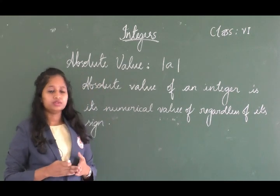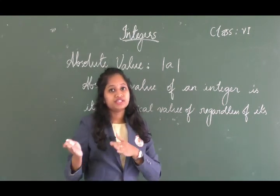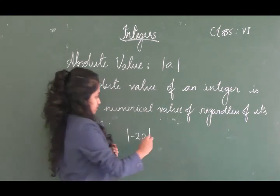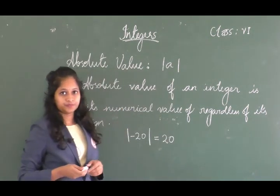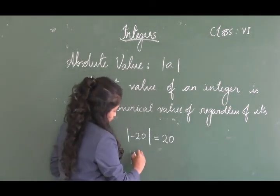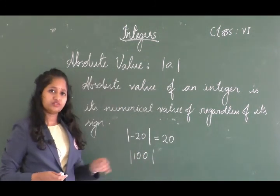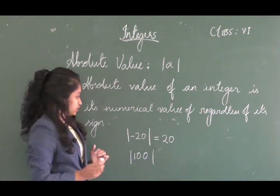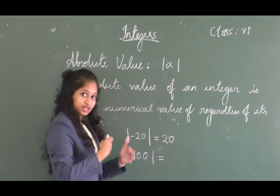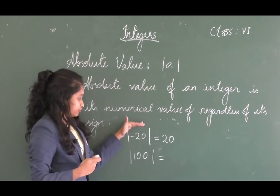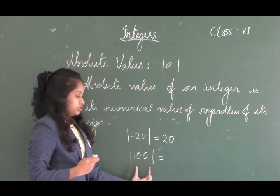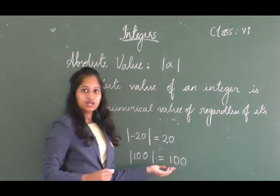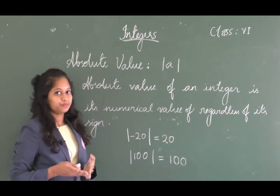For example, the absolute value of minus 20 is 20. What is the absolute value of 100? We need not change the sign — just take the numerical value inside the bars. So the absolute value of 100 is 100 itself, and the absolute value of minus 20 is 20.